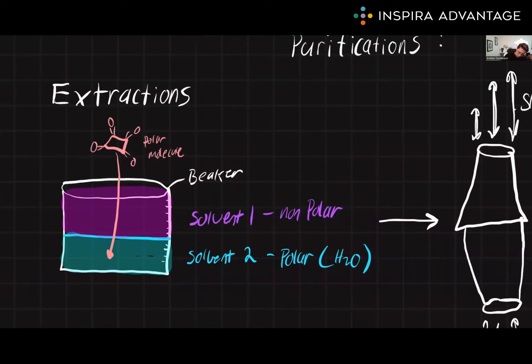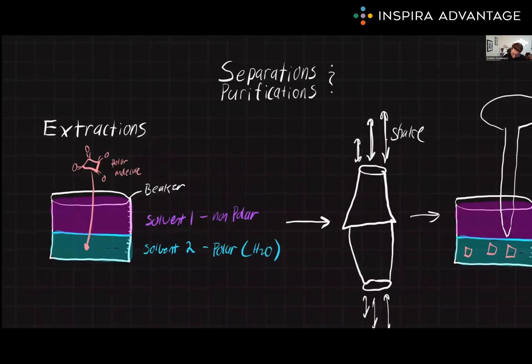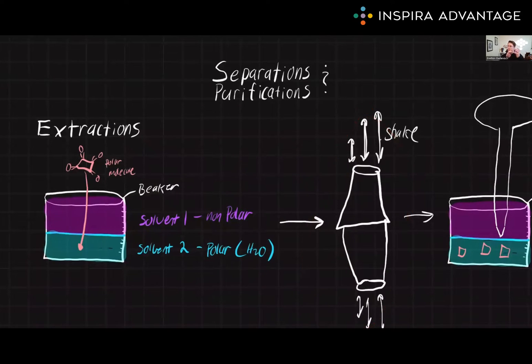So how does this work? Well, we take our molecule that we're trying to purify. In this example, it's this weird oxygen polar carbon thing, and we drop it into our mixture of two different phases. We then shake it, so we cause a bunch of micelles and we have a lot of interactions between all the different phases of these solvents.